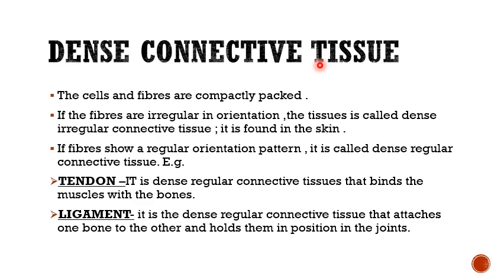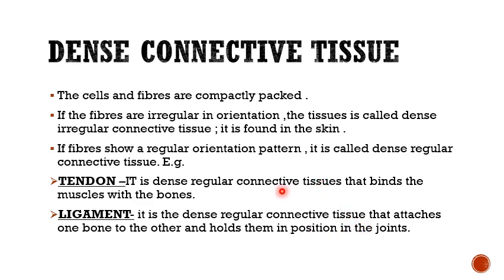The second part of proper connective tissue is dense connective tissue. The cells and fibers are compactly packed. If the fibers are irregular in orientation, the tissue is called dense irregular and is found in the skin. If the fibers show a regular orientation pattern, it is called dense regular connective tissue. Tendon is a dense regular connective tissue that binds muscle with bone. Ligament is a dense regular connective tissue that attaches one bone to another, holding them in position at joints.